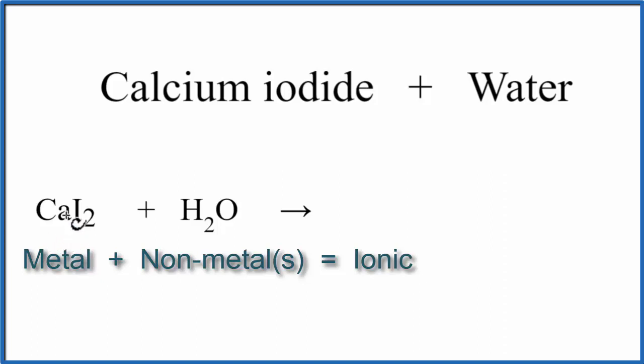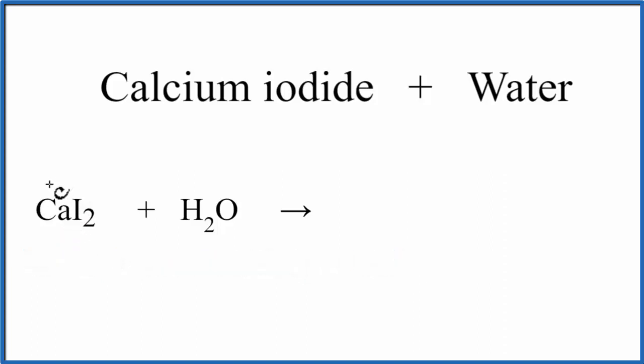If we go to the periodic table, calcium, that's in group 2, so it's going to have a 2 plus charge. And then iodine in group 17, sometimes called 7A, that has a 1 minus charge.